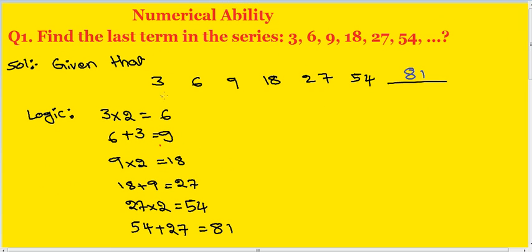Understand the logic. First, 3 into before number, 3 into 2 equals 6. Next, 6 plus 3 equals 9. This is one logic complete. Next, 9 into 2 equals 18. 18 plus 9 equals 27.